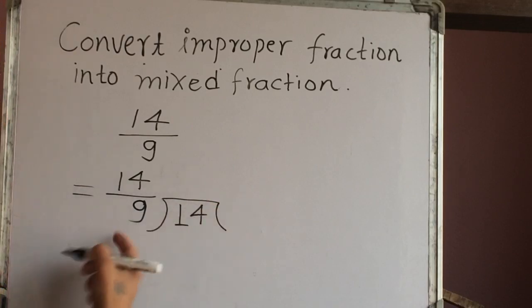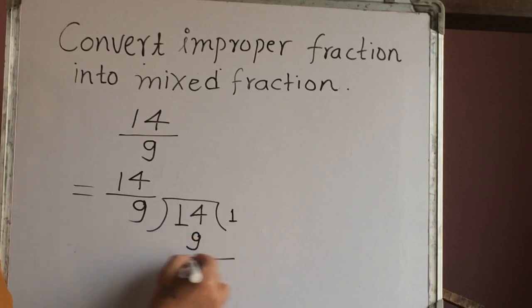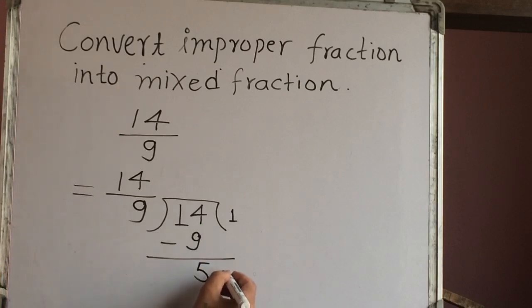Now divide it. 9 times 1 is 9. 14 minus 9 is 5. So the quotient is 1 and the remainder is 5.